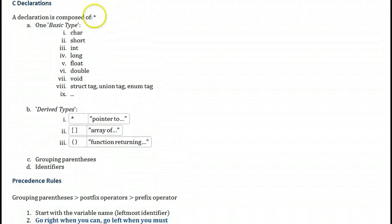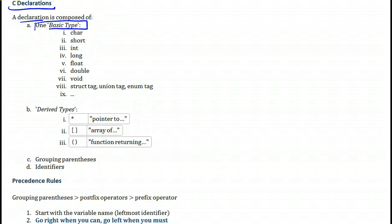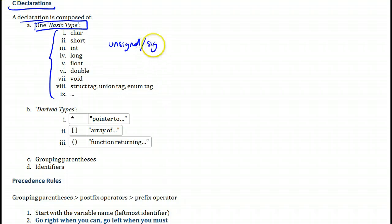So first of all, let's look at the components of a C declaration. A declaration in C will be composed of the following elements. First of all, you will have one basic type — I list some of the basic types right here — and you could also have unsigned and signed combinations with these where applicable. This will be one basic type that you will always find in a declaration.